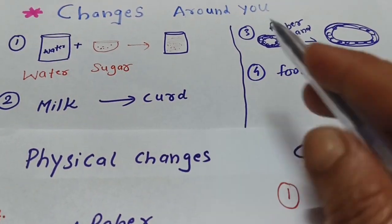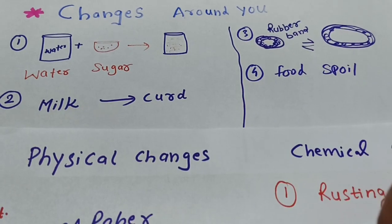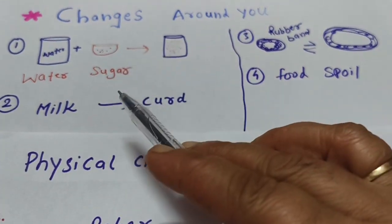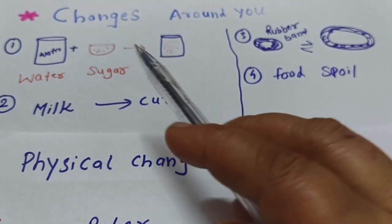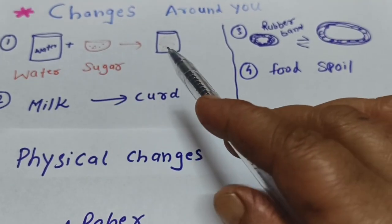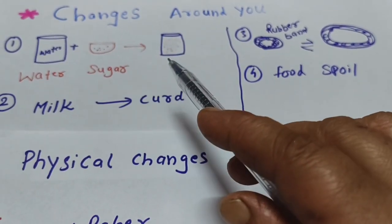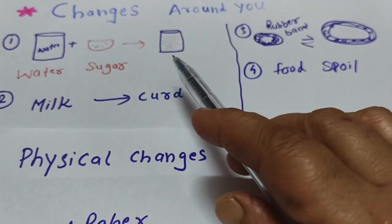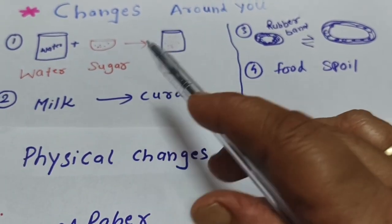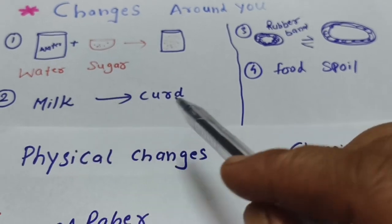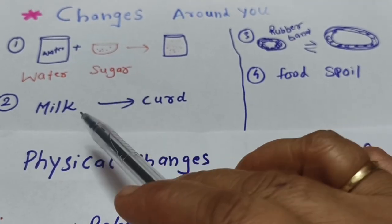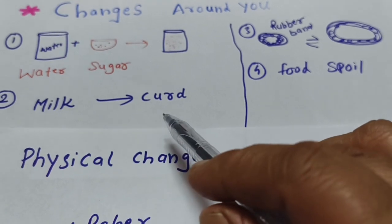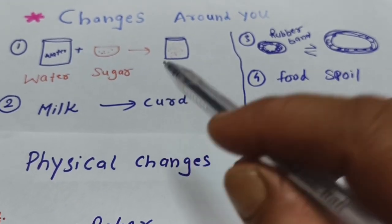What is a physical change? What is a chemical change? Physical changes are generally reversible. If we add water and sugar, then after evaporation we get the sugar back. So that is a physical change. But if milk changes to curd, it will not get converted back to milk — that is a chemical change.